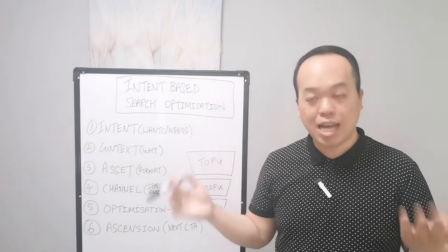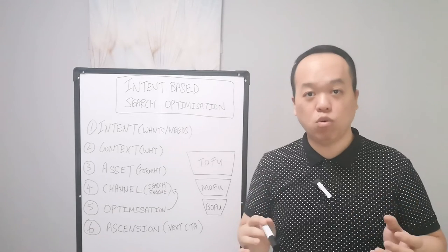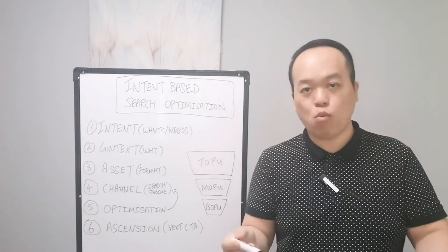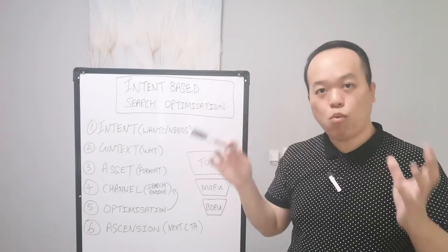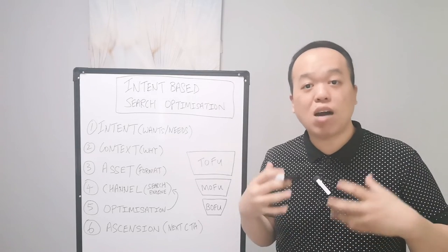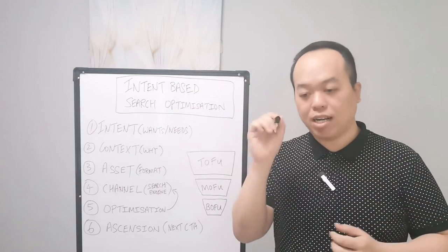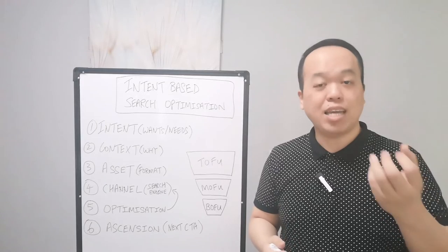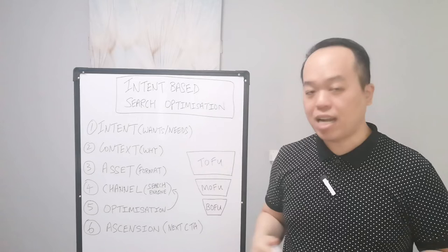The sixth and final step is ascension — one of the most important elements that many business owners overlook. Once you've attracted prospects to your website, you need to define what you want them to do next. For example, in the awareness stage at the top of the funnel, after they see your packages, the next step is to ascend them — such as offering a trial session directly on your website. This way, visitors know what to do next: click on the trial session to test your yoga packages before signing a long-term package.